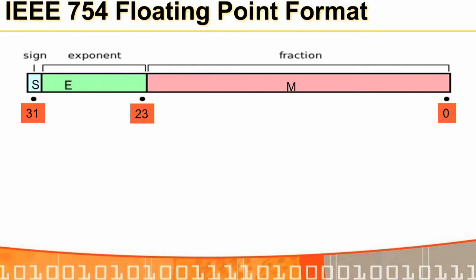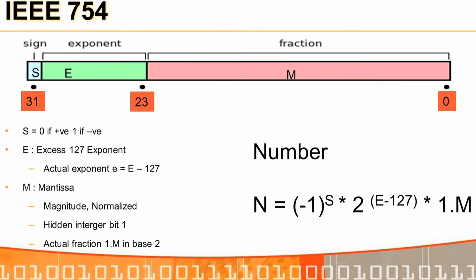The IEEE 754 floating point format for single precision — when you declare float X — is a 4-byte representation: 23 bits (bits 0–22) for the mantissa M, 8 bits for the exponent, and 1 bit for the sign. If S is 0, the number is positive; if S is 1, it is negative.